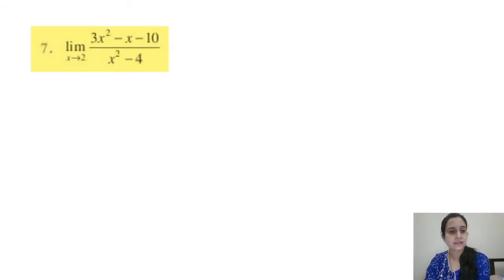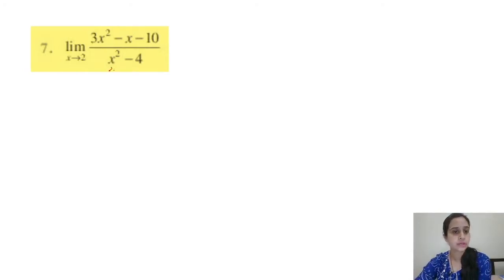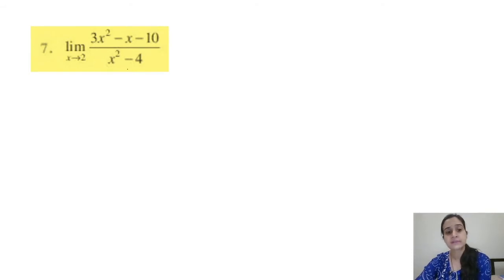Question 7: limit x tends to 2. Directly substituting x = 2 makes the numerator 0, so we cannot substitute directly. Since the numerator is degree 2, we use factorization — split the middle term. Below, use the a² − b² formula. Some terms will cancel, and we must keep writing the limit until we substitute values.